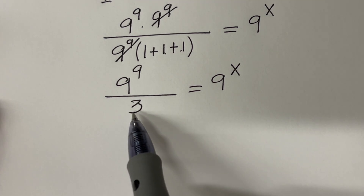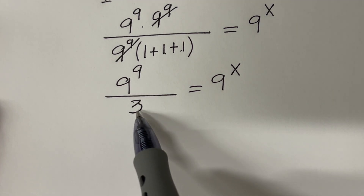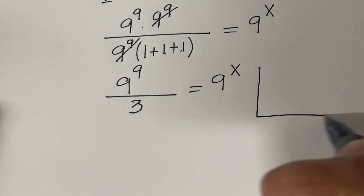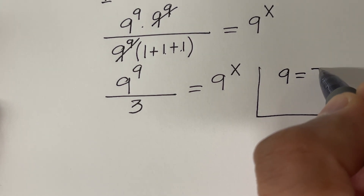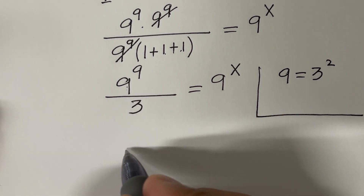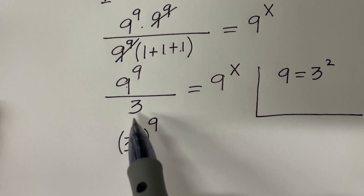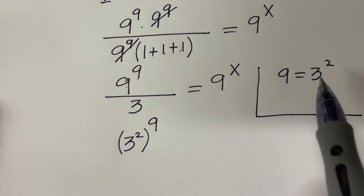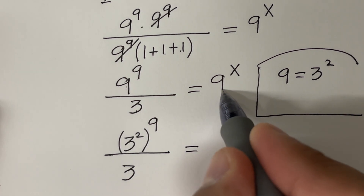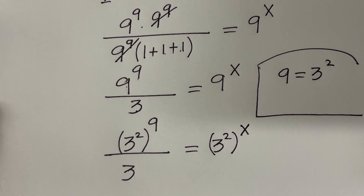Now if you look here, we have 3 and a bunch of 9s. So let's convert these 9s in terms of base 3. We know that 9 is equal to 3 raised to the power 2. So this 9 will be 3 raised to the power 2, raised to the power 9. Divided by 3. And on the right-hand side, similarly convert 9 as 3 raised to the power 2 and on top of it we have power x.